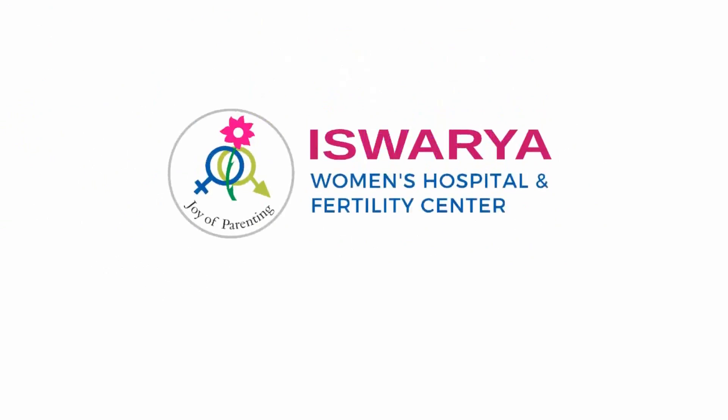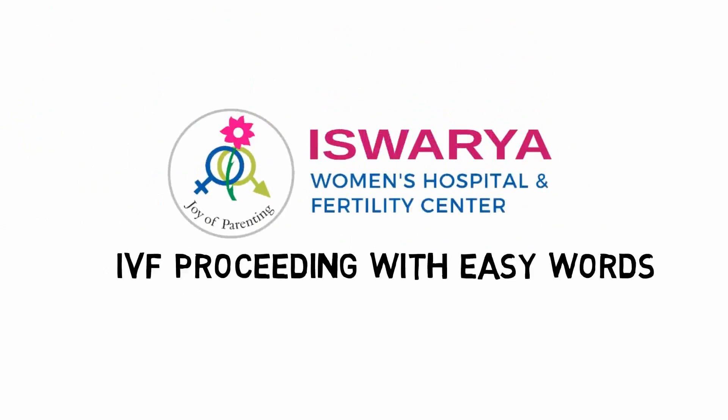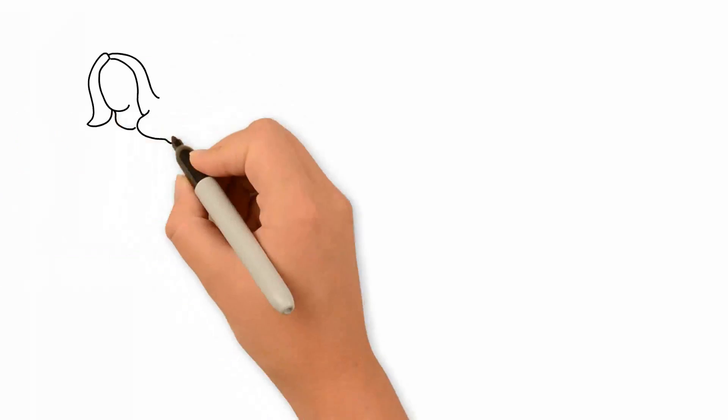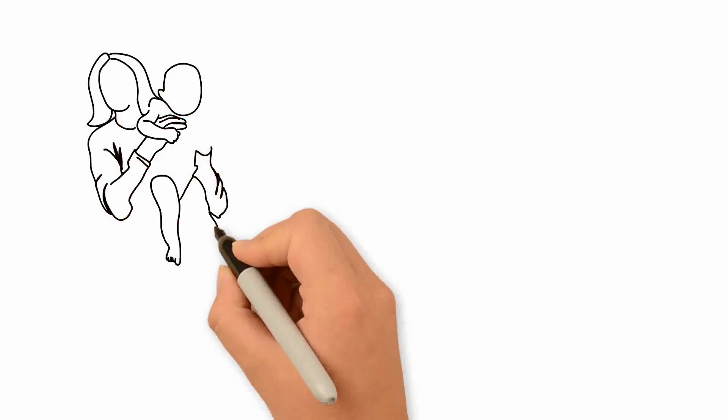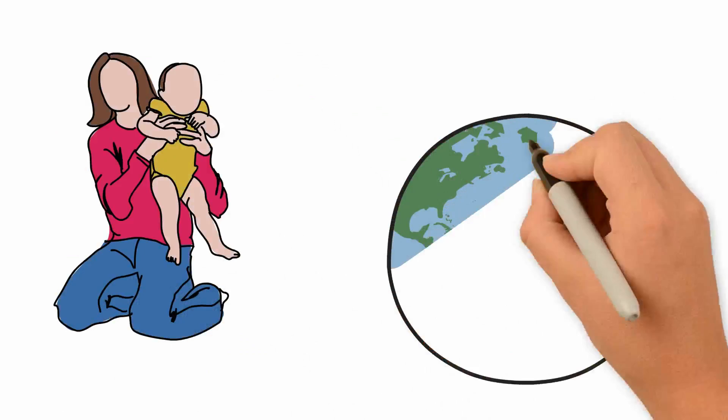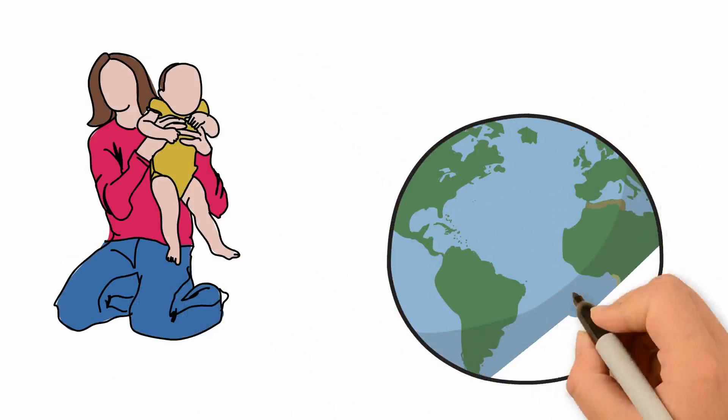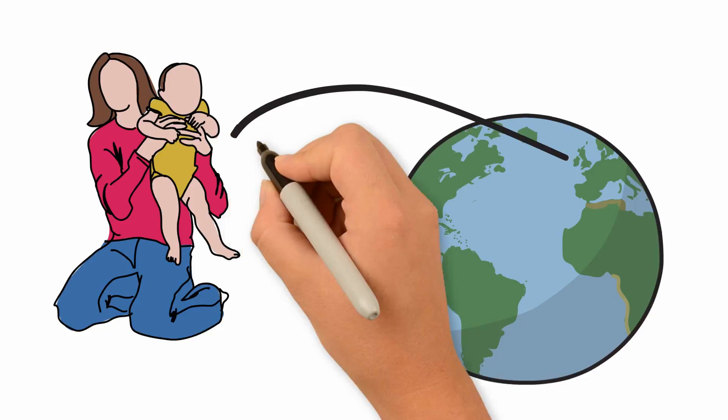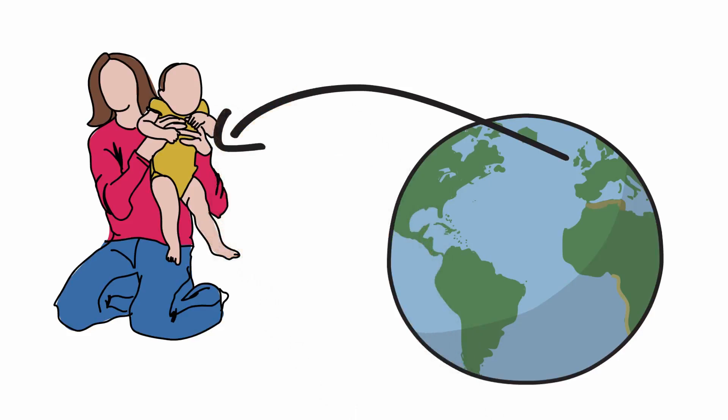IVF Explained Simply. Since the first IVF baby Louis Brown was born in England in 1978, more than 5 million children have been born using this technique. We are going to explain in plain language each step of the IVF process.